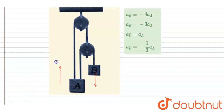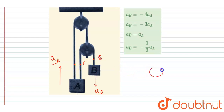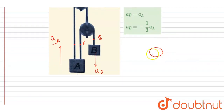Block A has acceleration aA and block B has acceleration aB. All these points on the string connected to block A will be moving in the upward direction with the same acceleration as block A. If I label this point as P and this point as Q, the acceleration of point P is aA in the upward direction, and the acceleration of point Q is the same as block B since it is attached to it, so it will be aB in the downward direction.